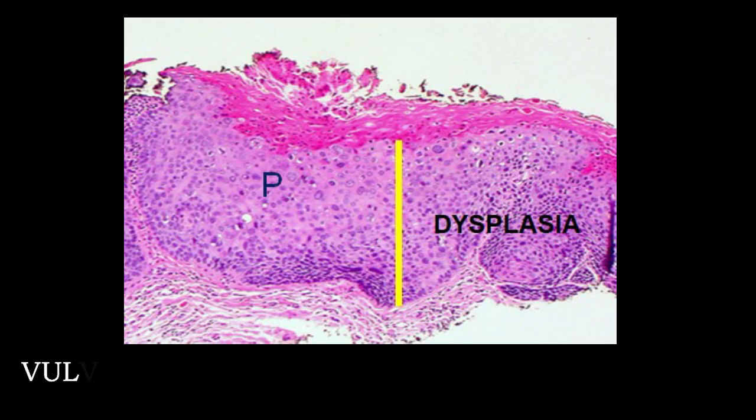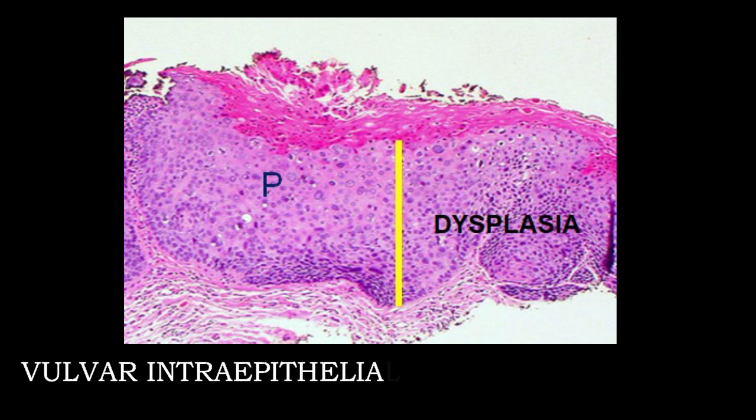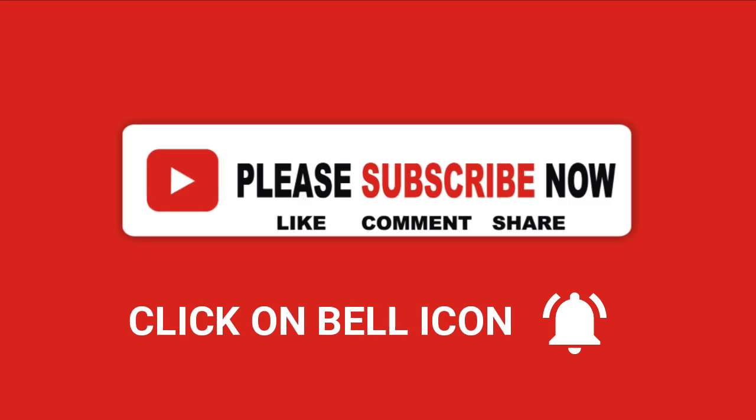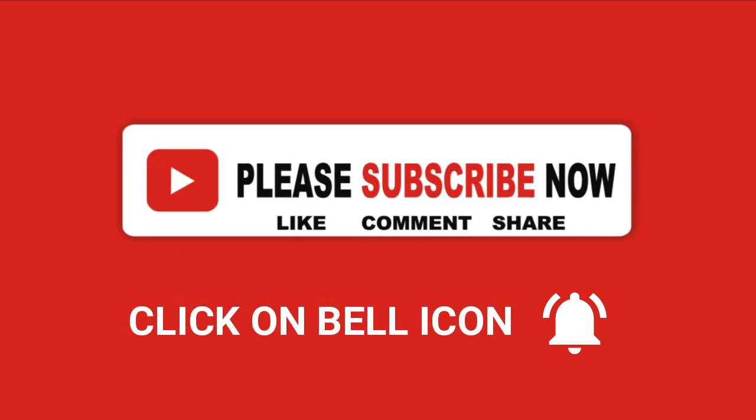Other diagnostic techniques include PCR and ISH to identify human papilloma virus 16. VIN lesions mostly contain an aneuploid population of cells. The photograph shows microscopic features of VIN 3: the entire thickness of the epithelium is involved in dysplastic changes, marked with a yellow line. The letter P shows parakeratosis.